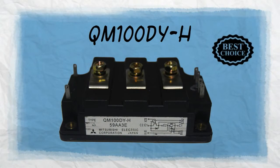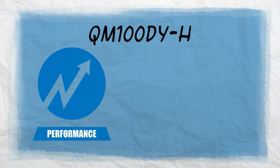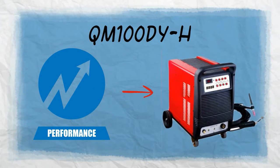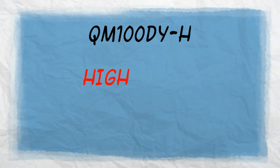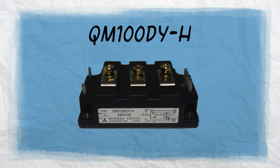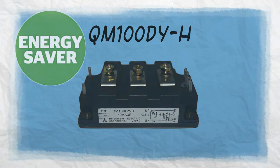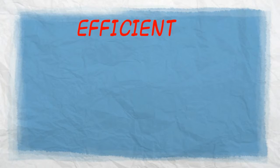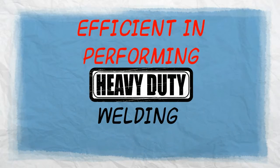QM100DYH Transistor Module is the best choice for those who want to boost the performance of their welding machines. Despite being a high-power device, QM100DYH is also known for being energy efficient, yet also efficient in performing heavy-duty welding tasks that can last for a long time.